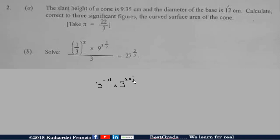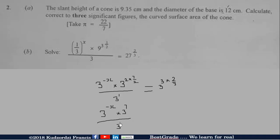We have 3 to the power of x, times 7/2, all over 3 to the power of 1. Then we change 27 to 3 to the power of 3, and times 2/3. We apply the law of indices: because the bases are multiplying, we add the exponents, giving us 3 to the power of (negative x plus 7), all over 3 to the power of 1, equal to 3 to the power of 2.